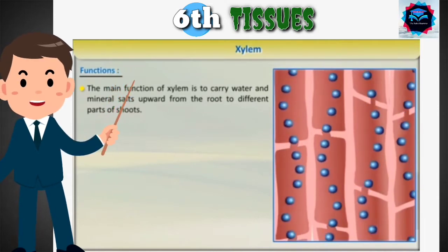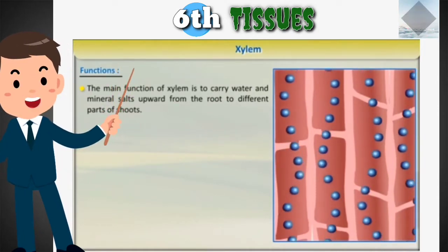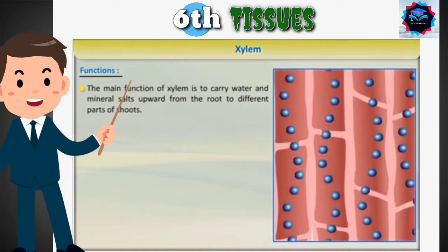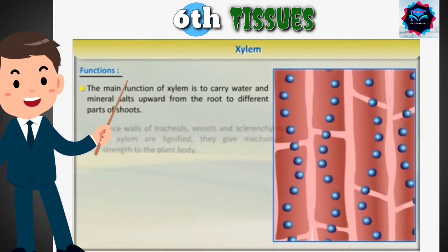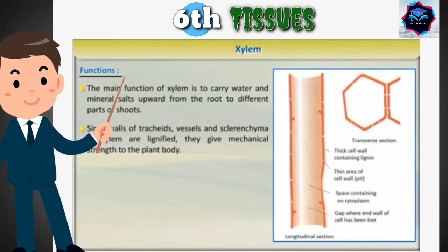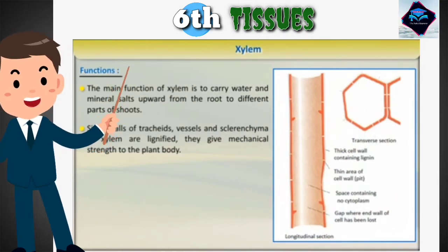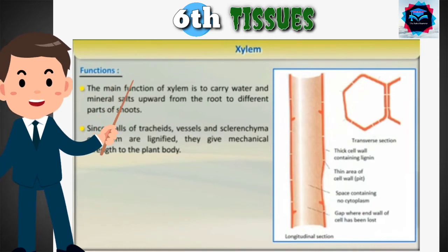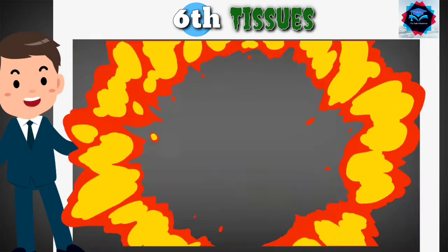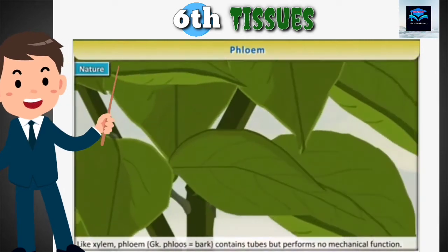The main function of xylem is to carry water and mineral salts upward from the root to different parts of the shoot. Since the walls of tracheids, vessels, and sclerenchyma of xylem are lignified, they give mechanical strength to the plant body.